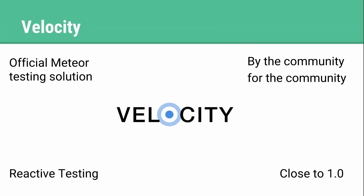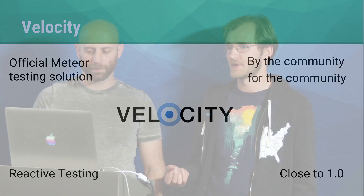So Mike is going to talk a bit about Velocity. Velocity, for those of you that aren't familiar, is the official Meteor testing solution. It is a community effort. One of the main goals with Velocity is to make it so that testing is reactive. So as soon as you save a test, you immediately get feedback.